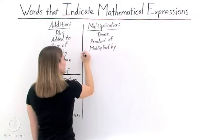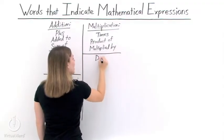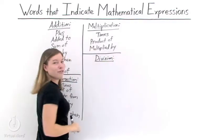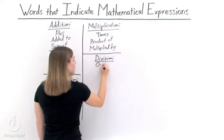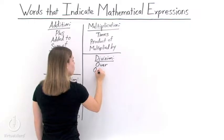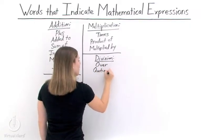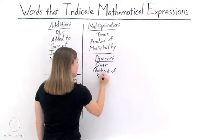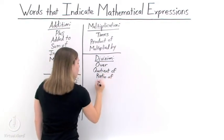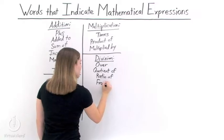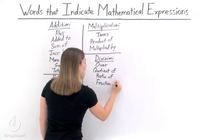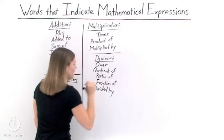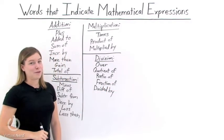Now division. When we see these words, it means that we're supposed to divide: over, the quotient of, the ratio of, the fraction of, and of course, divided by. Seeing any of these words means that we're supposed to divide.